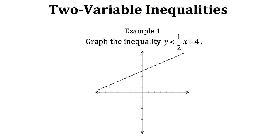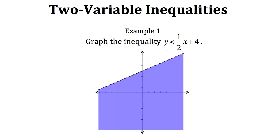This is what the line would look like. Now we also need to signify whether it's less than or greater than. Since it's less than, we're going to shade the region that's below the line. So our graph would look something like this. Since y is less than one-half x plus four, we have the dotted line because y will not equal that expression, but it can be anything less than that — hence all the shaded area below it. This is how we would graph a linear inequality.